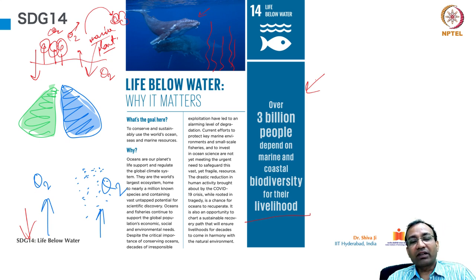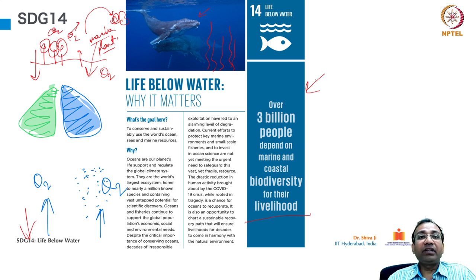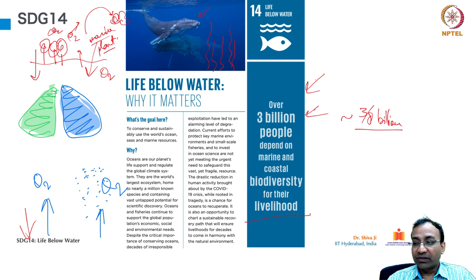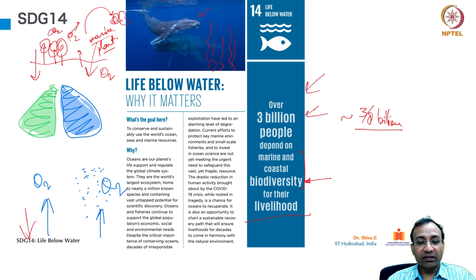We were just discussing about water and marine animals. Even if we do not live underwater, we depend on it. Out of 8 billion people, 3 billion depend on oceans for their livelihood. Very importantly, the point here is the biodiversity — marine and coastal biodiversity. We will discuss this in subsequent lectures.